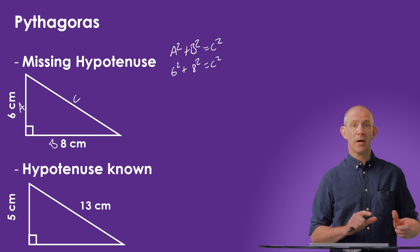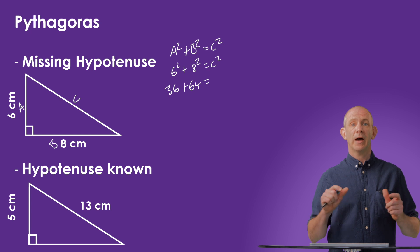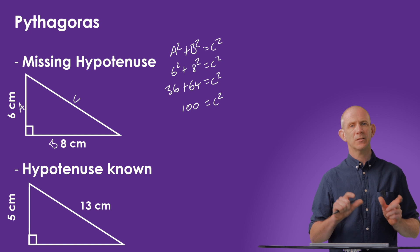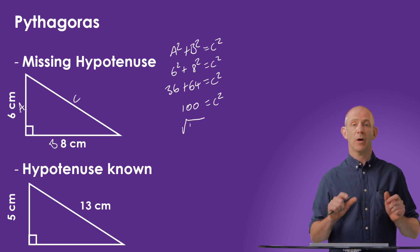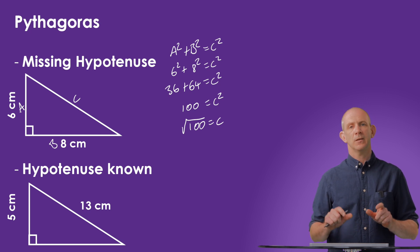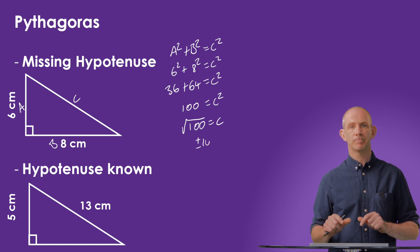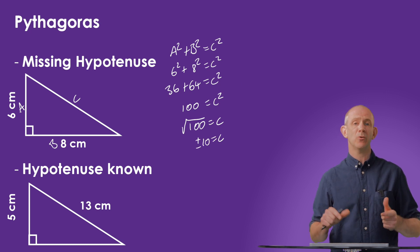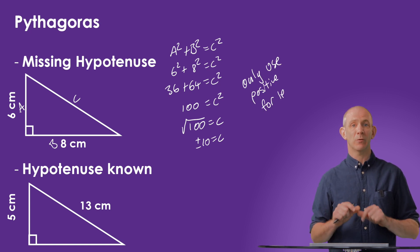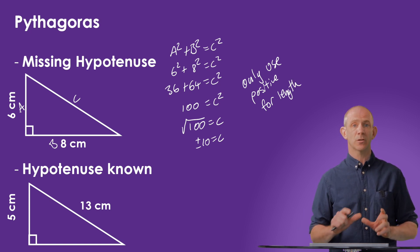If we calculate the powers of those two numbers, we'd get 36 plus 64 equals C squared, and then we can say that 100 equals C squared. In order to find C, we need to square root both sides, and we'll end up with the square root of 100 equals C. This will mean that plus or minus 10 will equal C. However, as we're dealing with a length, we can only use the positive value. Please recognise that this is going to be the case with all lengths, so I won't be using the negative answer in any future solutions of Pythagoras.